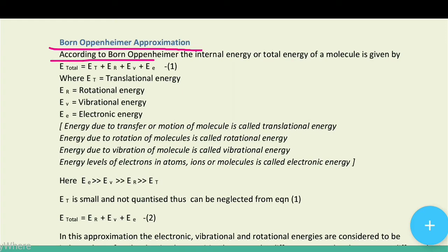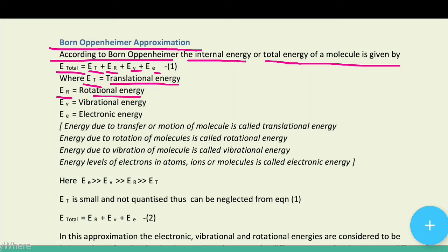According to Born-Oppenheimer, the internal energy or total energy of the molecule is given by E_total = ET + ER + EV + EE (equation number 1), where ET is translational energy, ER is rotational energy, EV is vibrational energy, and EE is electronic energy.